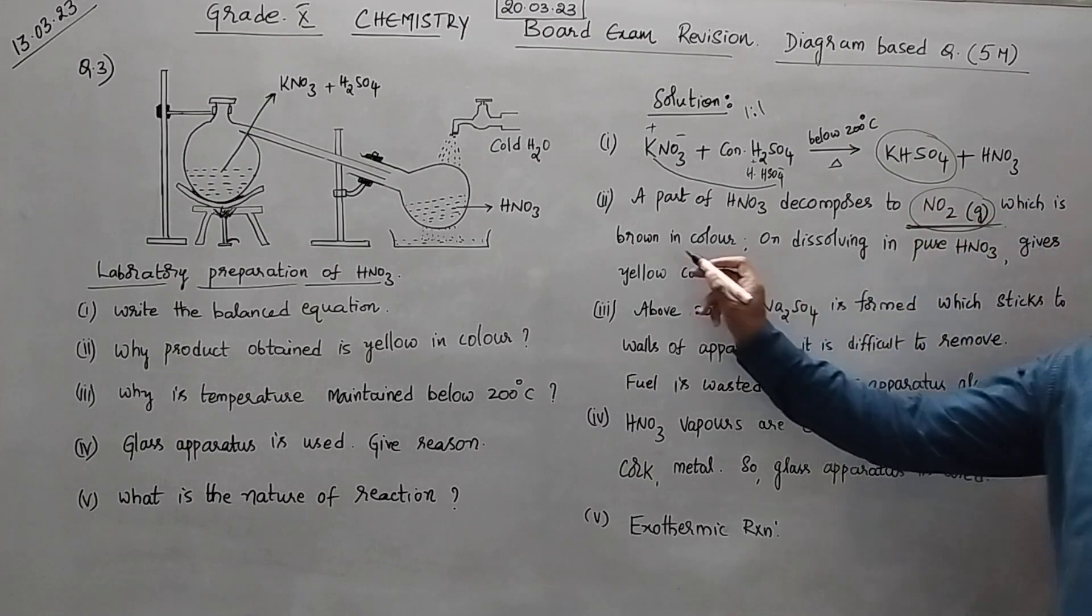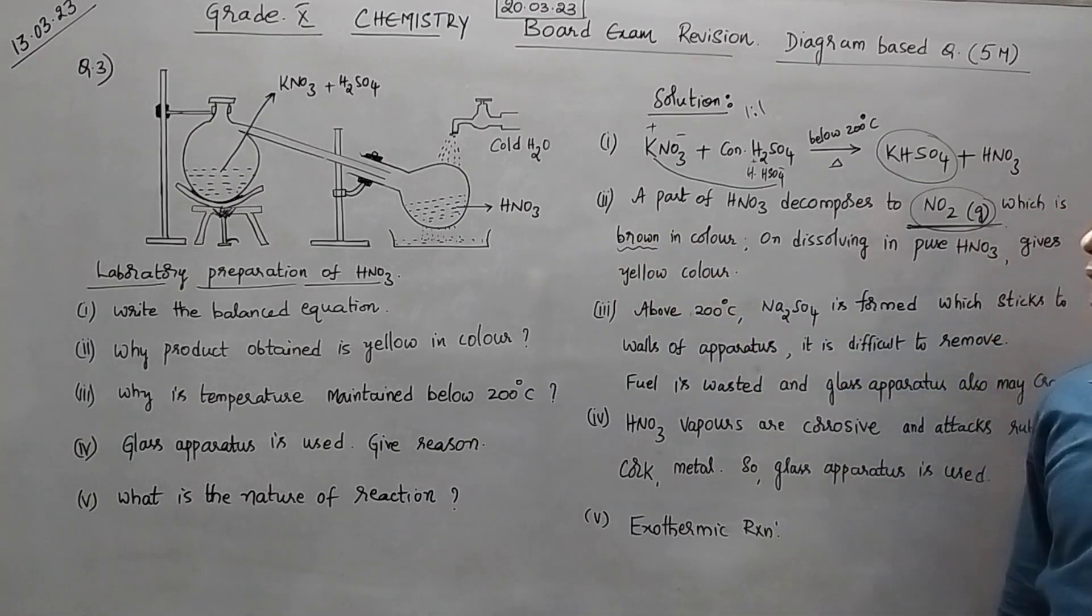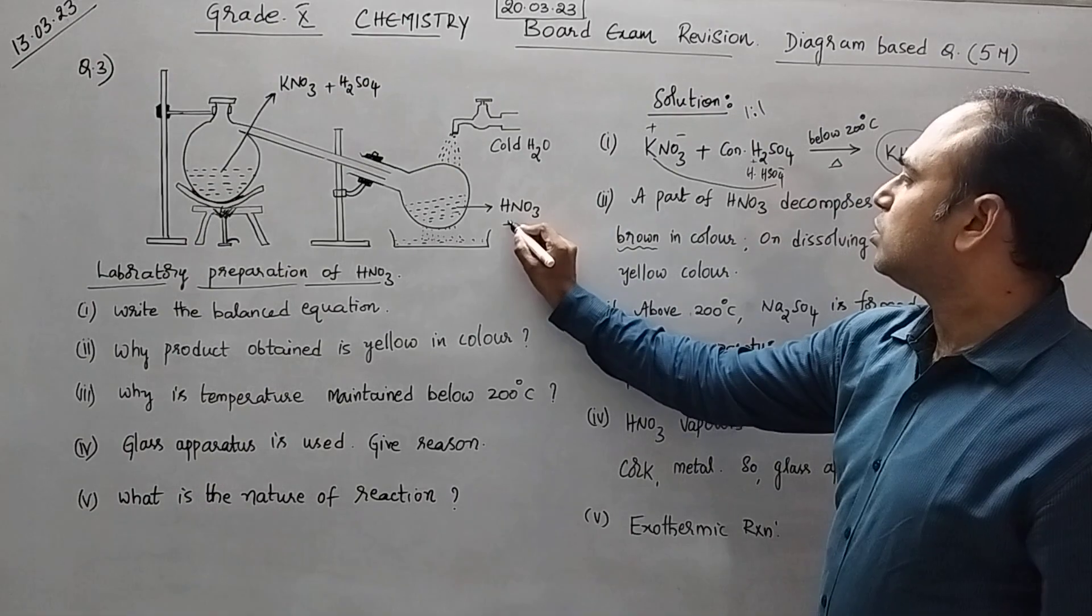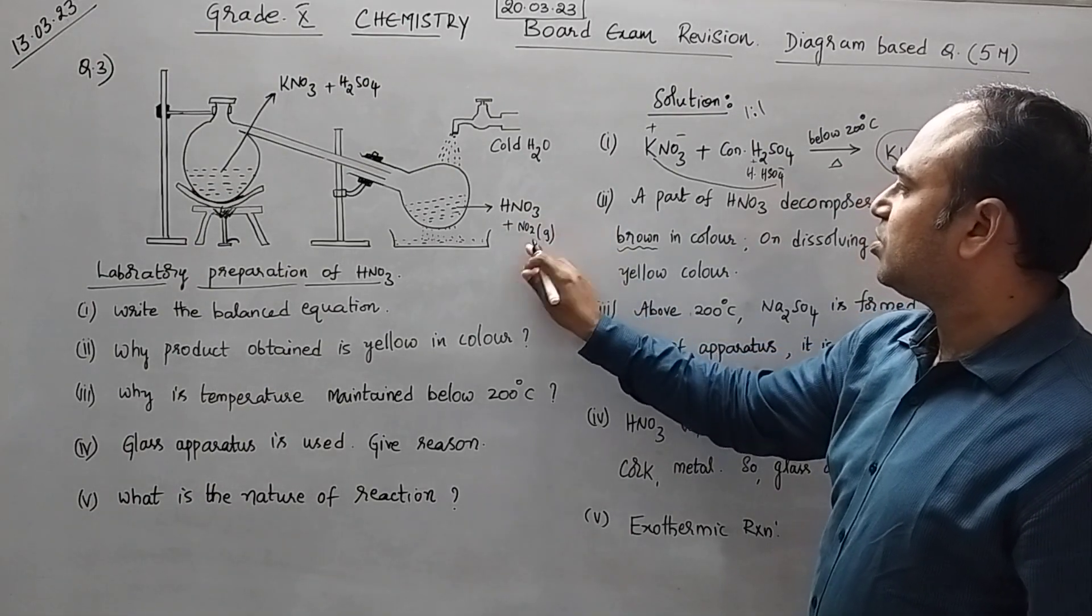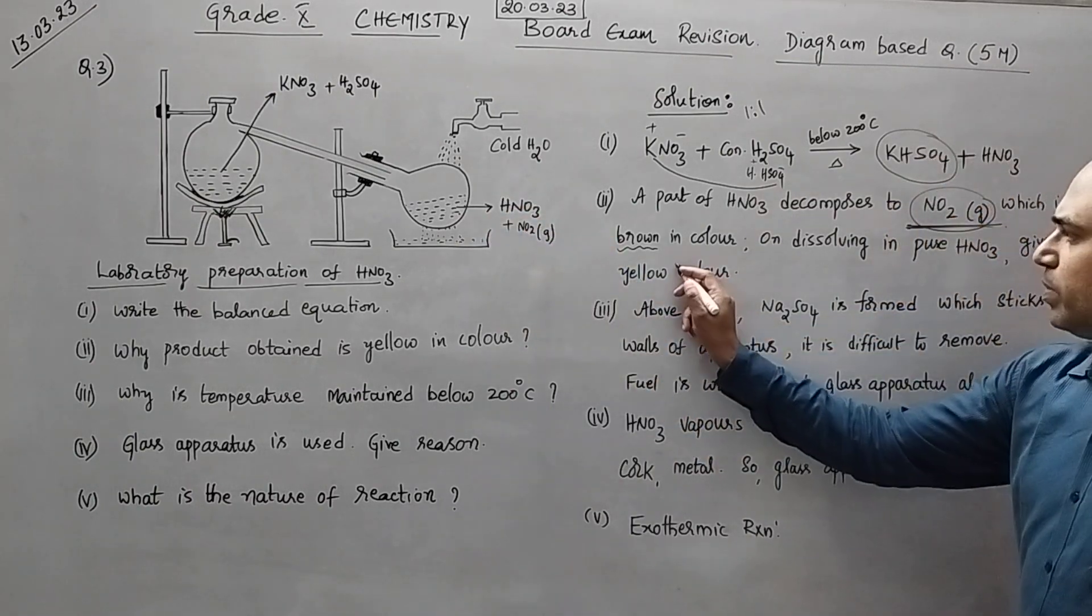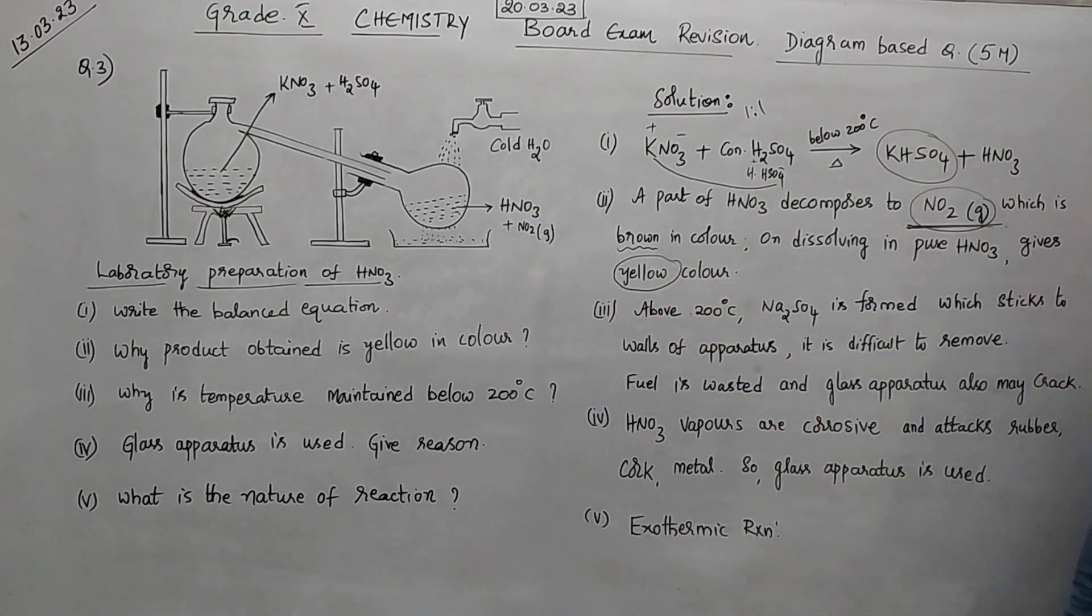The reason is the part of HNO3 will decompose into nitrogen dioxide that is NO2. So this gas will be in which colour? Brown. And you are having some portion of HNO3. So what happens? This NO2 gas is dissolved into this. So therefore the total colour now will become yellow.